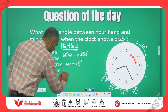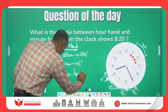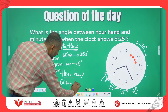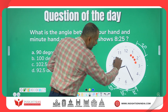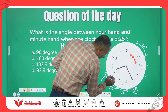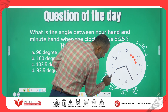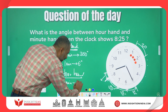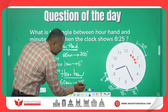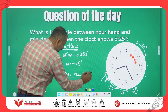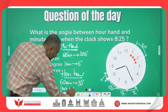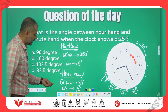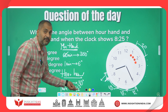Similarly, the hour hand in 60 minutes covers from one number to the next — for example from 8 to 9. In 1 hour it covers one part, which is 30 degrees. So in 1 minute the hour hand covers 30 divided by 60, which is half a degree. The hour hand covers half a degree per minute.